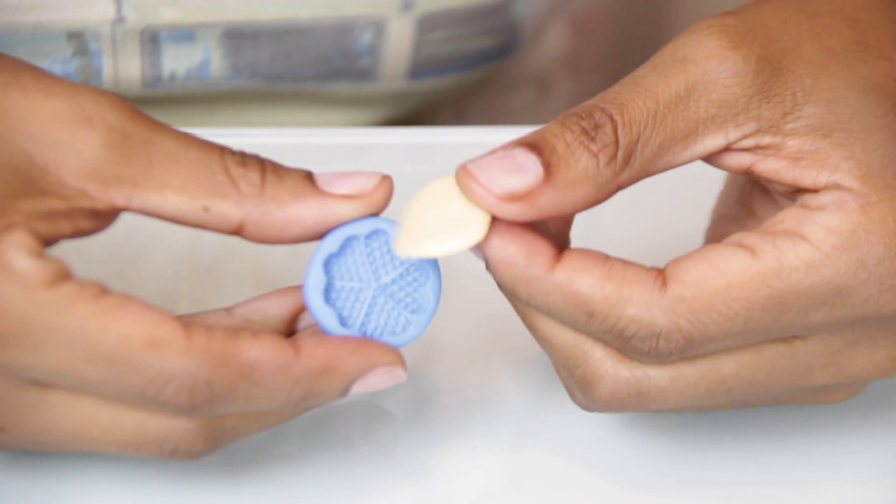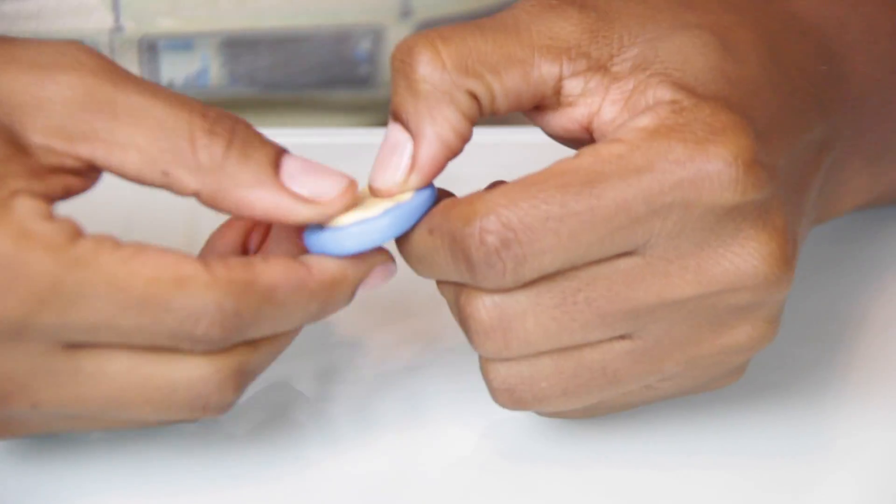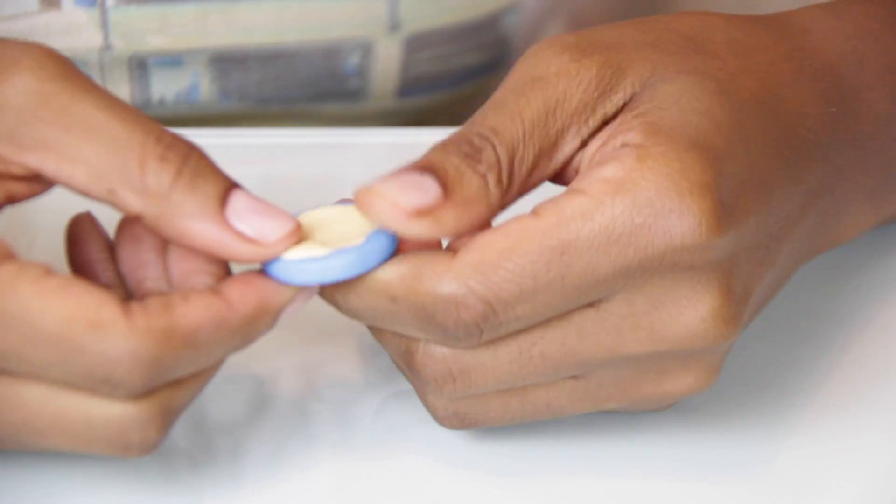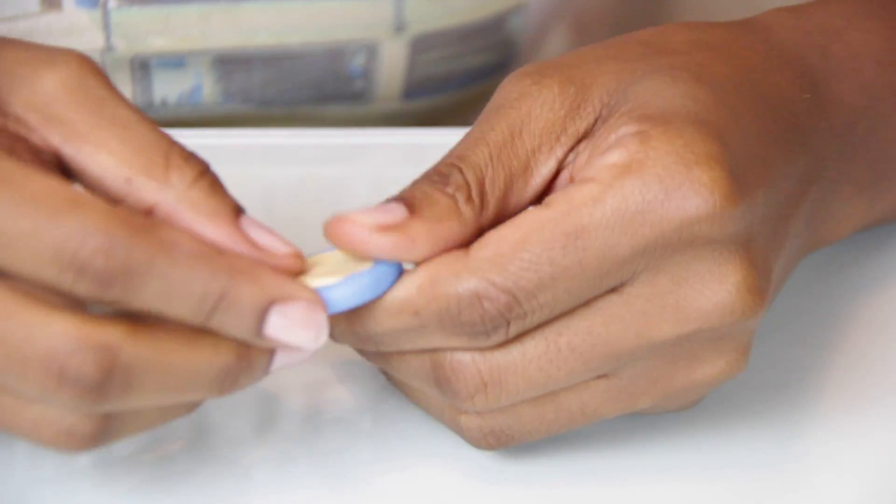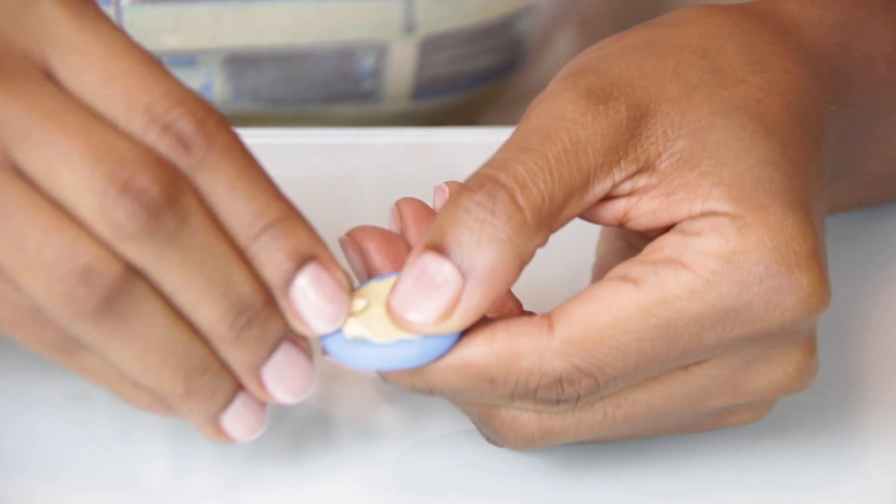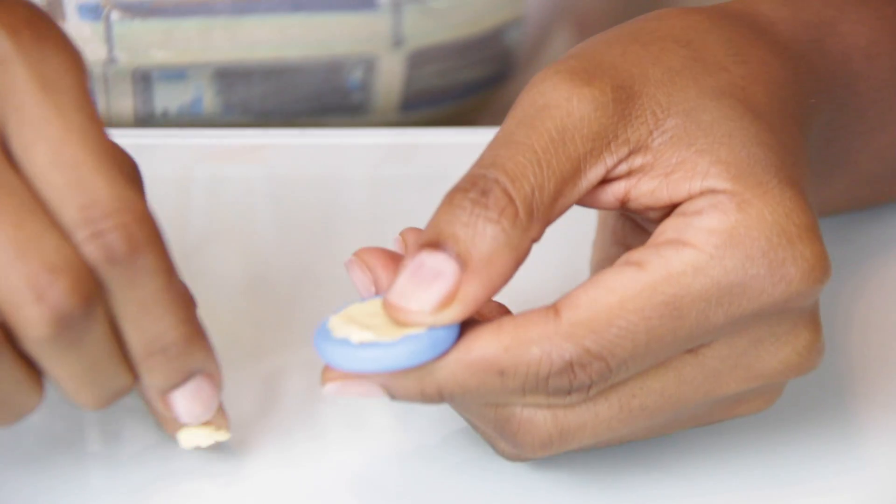So to make the waffle, I just mixed together some tan and translucent clay and then pressed it into the mold. And if you put in too much clay, it's okay. You can just peel away the excess or use a blade to cut it off.